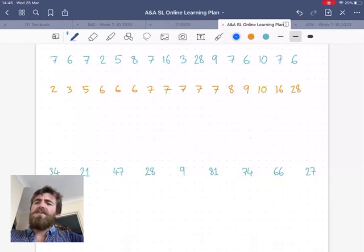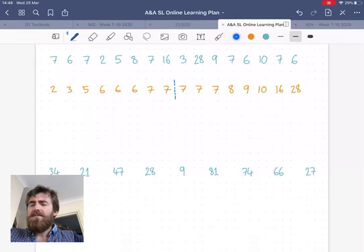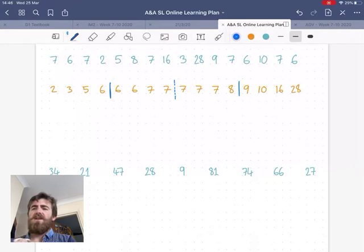If we order the list - this is the ordered version of the list above - we find the median, which is right in the middle there. The median is seven. This is just helping us with a measure of spread.